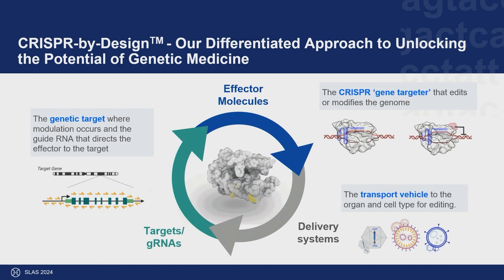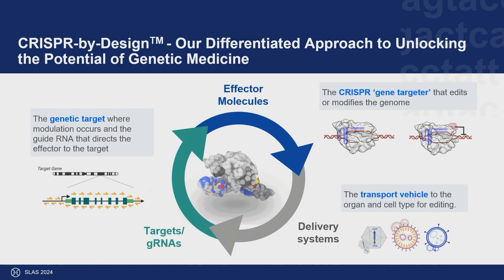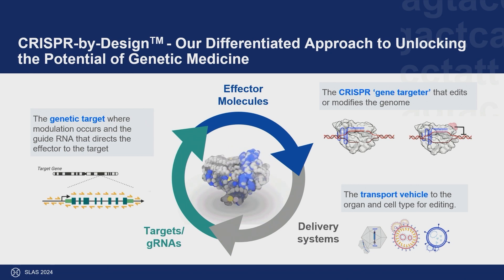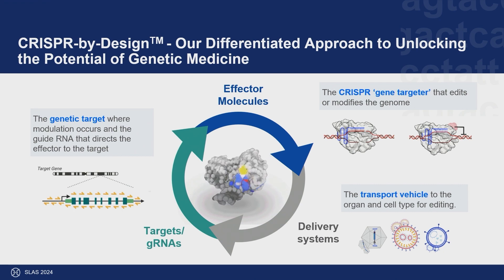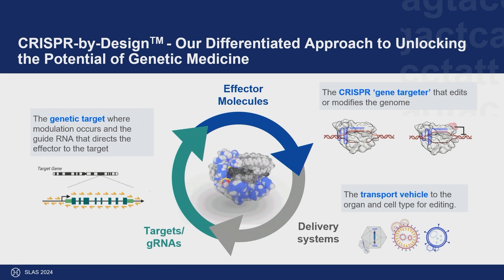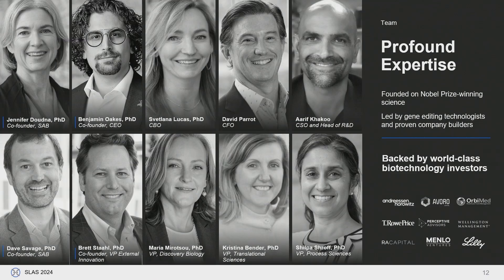Scribe is a CRISPR-by-design company, meaning we engineer CRISPR-based therapeutics from start to finish, starting with genetic targets. We also engineer the CRISPR effector molecules and the transport vehicles to take our CRISPR therapeutics to the correct organ or tissue system. Our technology is built on Nobel Prize-winning science out of the Doudna and Savage labs at UC Berkeley.